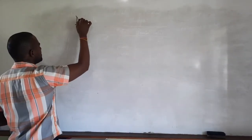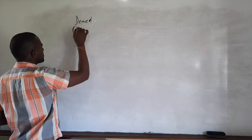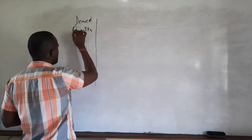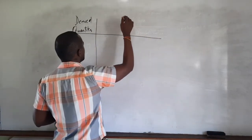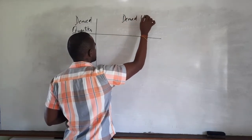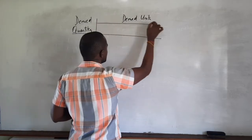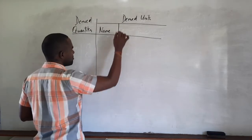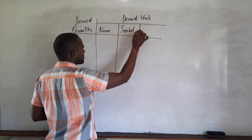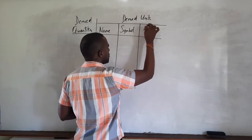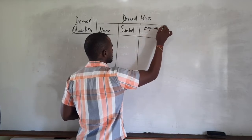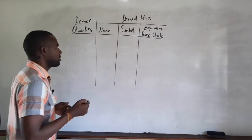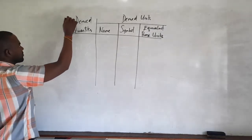We'll be looking at the derived quantities in one column, their derived units, the name of the unit, the symbol it carries, and of course the equivalent base units. This is basically what our focus will be on.